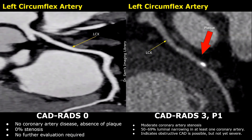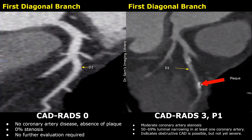In this image, we can see calcified plaques in two areas in the first diagonal branch. This plaque is larger and seems to cause a stenosis of greater than 50%. This was classified as CADRADS 3.